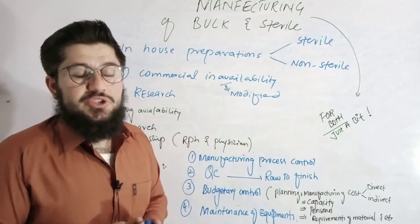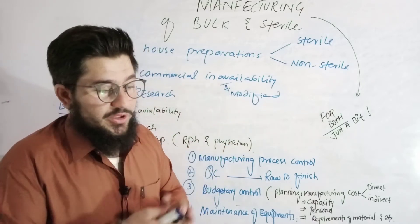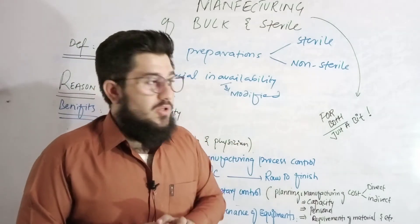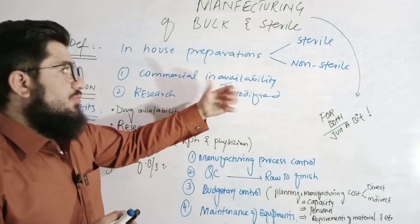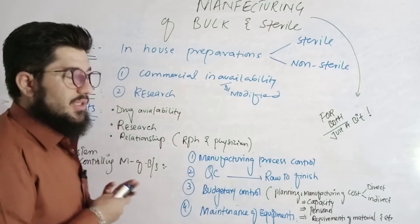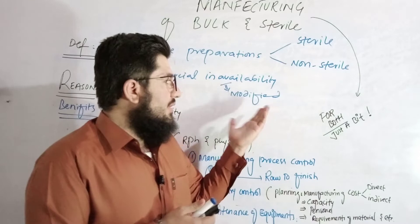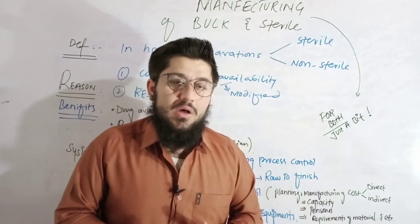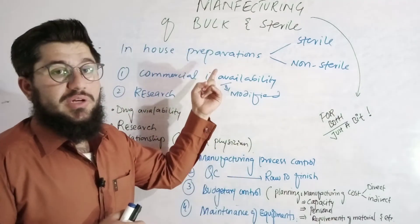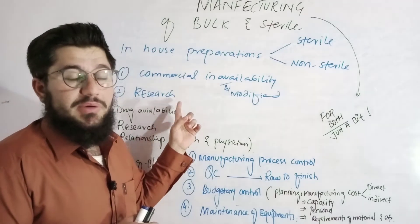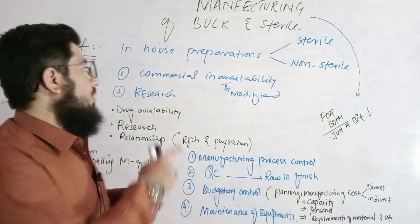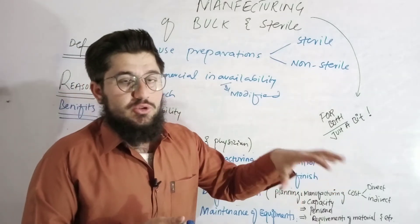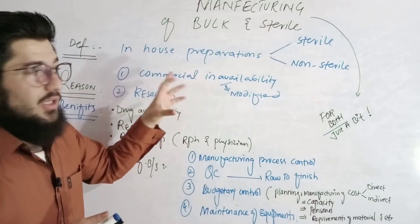For a modified formulation, we modify the drug — sometimes we combine two drugs, decrease or increase the concentration, etc. So we need a modified drug, and for that we do in-house preparation. Number two: sometimes for a particular research, we need to modify drugs for research purposes. It is not about the entire globe or entire community, so again we do in-house preparation rather than industrial preparation. So we got two reasons: number one, some drugs are not commercially available, and number two, we are doing research.